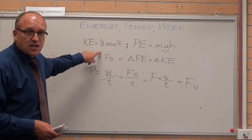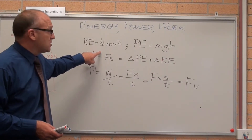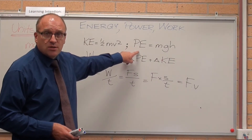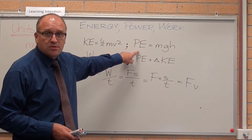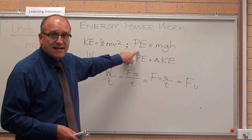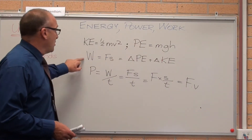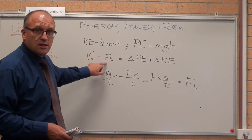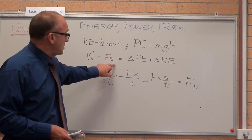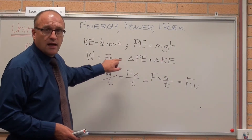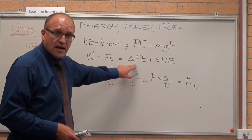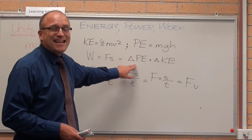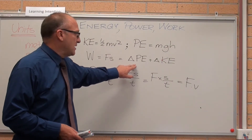Kinetic energy is one-half mass times velocity squared. Potential energy is just mass times gravity times height — I'm going to work through these in the next example. Work done equals force times the distance it's travelled, and the work done equals the change in kinetic energy plus potential energy.